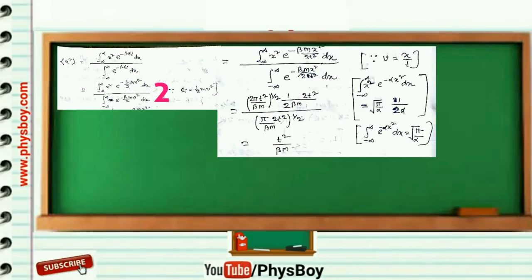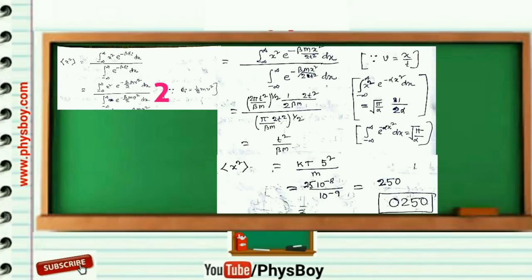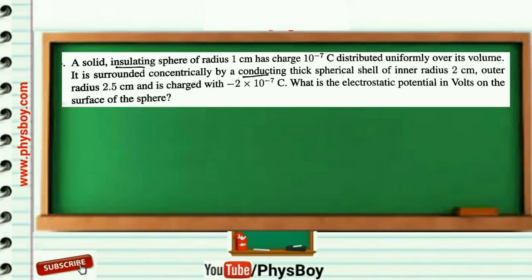Now we find the value of ⟨x²⟩ at time t = 5 seconds. Putting β = 1/kT, with kT = 10⁻⁸ joule, t² = 25, and m = 10⁻⁹ kg, and solving this equation, we get 250. So the answer is 0250.